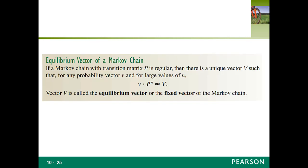In the example with Johnson cleaners, the equilibrium vector V is approximately 0.64 and 0.36 — that's the vector that it seems to be approaching.